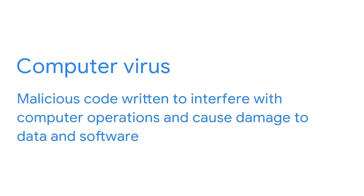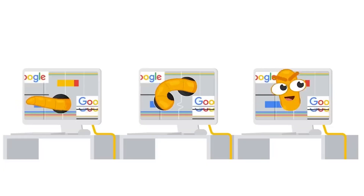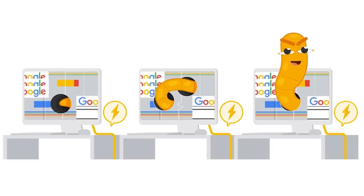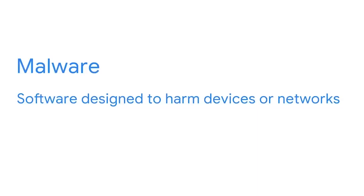Let's go over a couple of key terms that will support your understanding of the attacks we'll discuss. A computer virus is malicious code written to interfere with computer operations and cause damage to data and software. The virus attaches itself to programs or documents on a computer, then spreads and infects one or more computers in a network. A worm is a type of computer virus that can duplicate and spread on its own without human involvement. Today, viruses are more commonly referred to as malware, which is software designed to harm devices or networks.